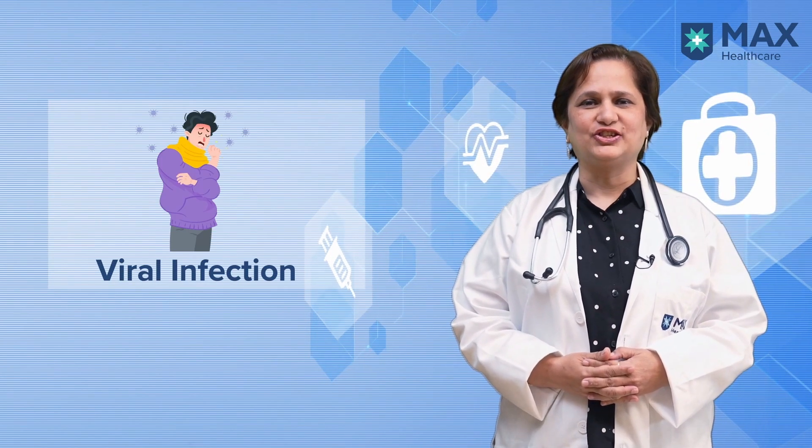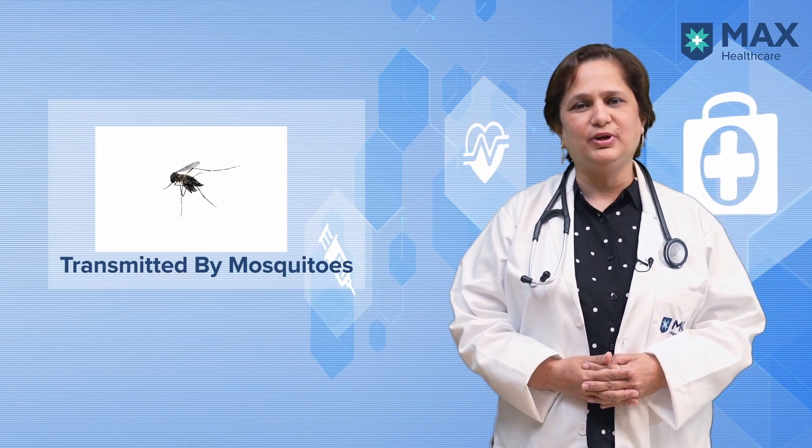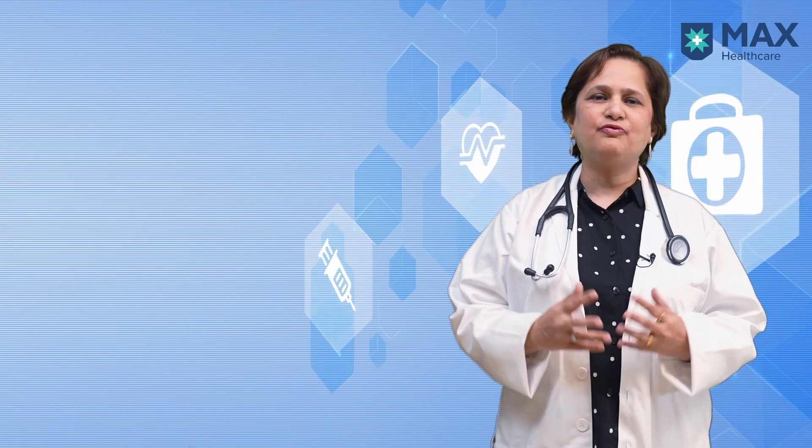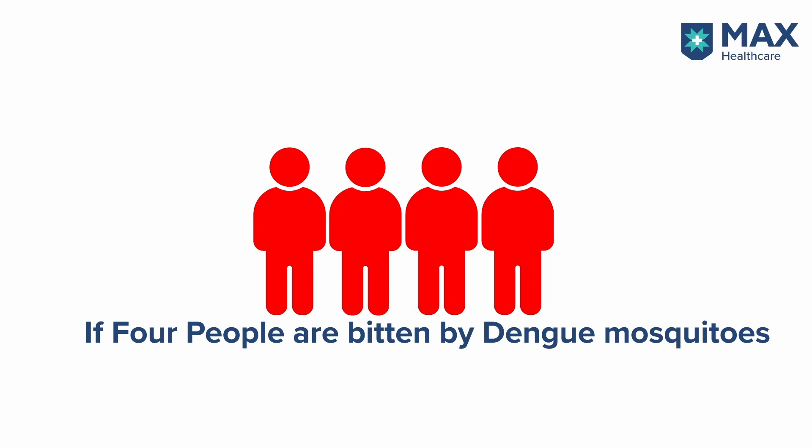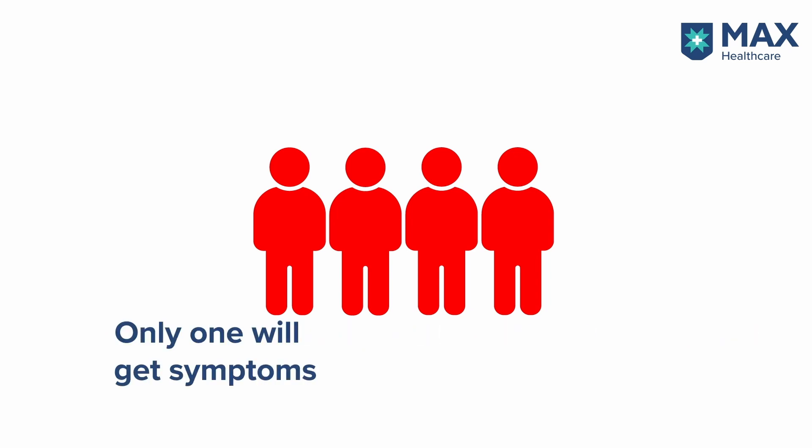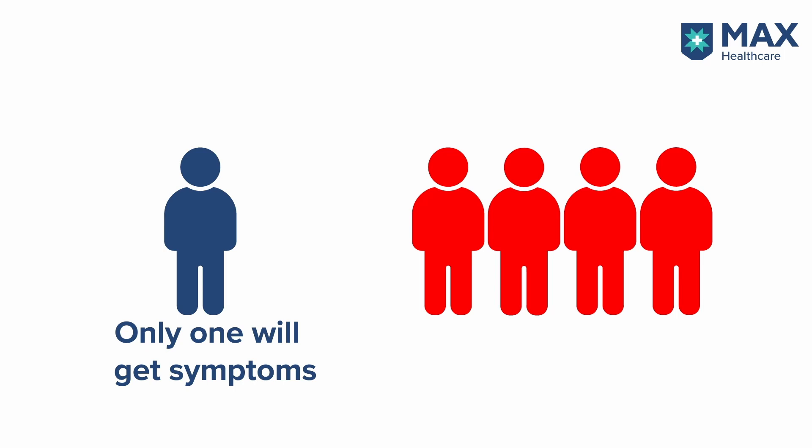Dengue is actually a viral infection that is transmitted by mosquitoes, and there are four different types of Dengue. During one particular year, it is only one strain of Dengue which will be causing all the infection. If four people are bitten by the Dengue-bearing mosquito, only one will be unfortunate enough to get the symptoms; the rest three can be purely asymptomatic.